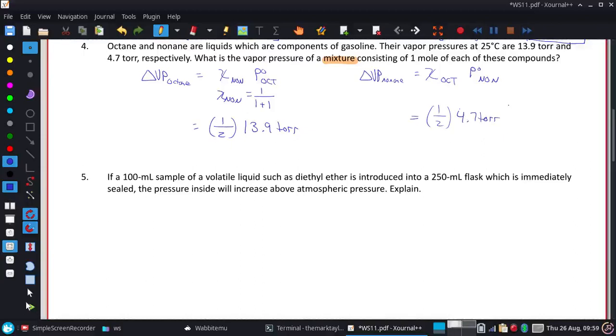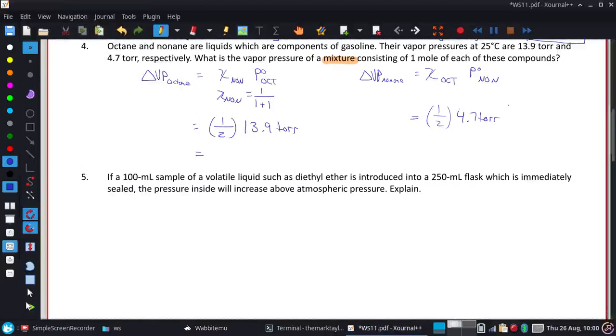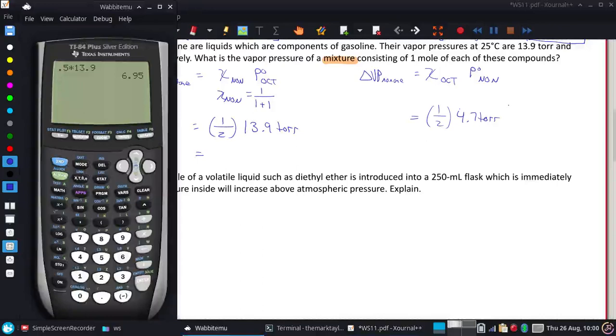Now, we're not doing anything necessarily with these values because it turns out what we're going to solve for here is how much it changes, the vapor pressure that is. So when I first calculate this 0.5 times 13.9, I just get 6.95, which is how much the octane's vapor pressure dropped. So I am going to write that down because I did say delta VP, so it is this 6.95.